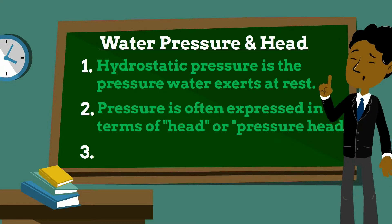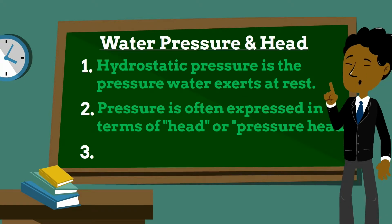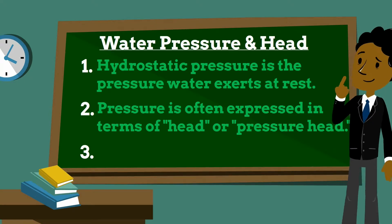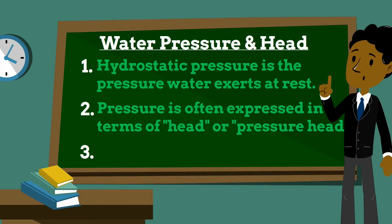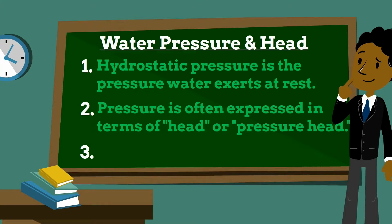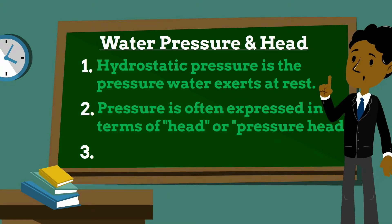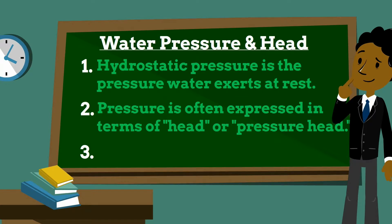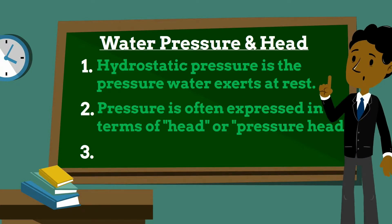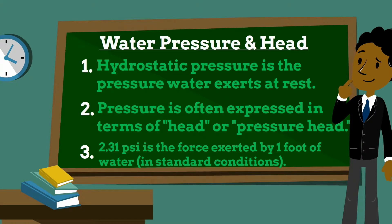It is often convenient to express pressure in terms of the height of a column of water, in meters or feet, instead of in terms of pounds per square inch. Pressure head, as it is called, is the actual or equivalent height of water above the point in question. A conversion you can use is that 2.31 PSI is exerted by one foot of water under standard conditions.